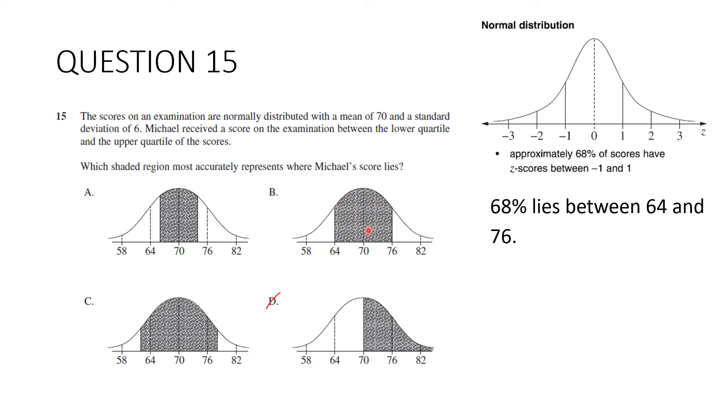Michael received a score between the lower quartile, which is at 25%, and the upper quartile, which is at 75%. So we want the middle 50%. Can you see which one it is? If this one's 68%, that's more. It's going to have to be this one here. So our answer is A.